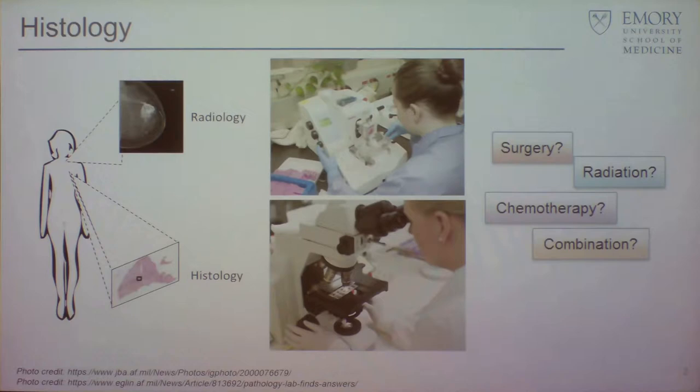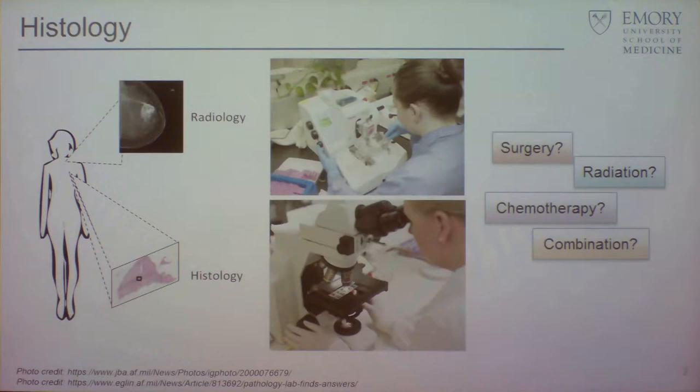Of course, we stain it — we put two stains. One is called hematoxylin and the other is called eosin. They're both counter stains because they stain different components of the tissue. Then a specialized doctor known as a pathologist looks at those and figures out the subtype, what type of tumor it is, how long the patient is expected to live, what kind of chemotherapy they should get, or whether they should get chemotherapy at all.